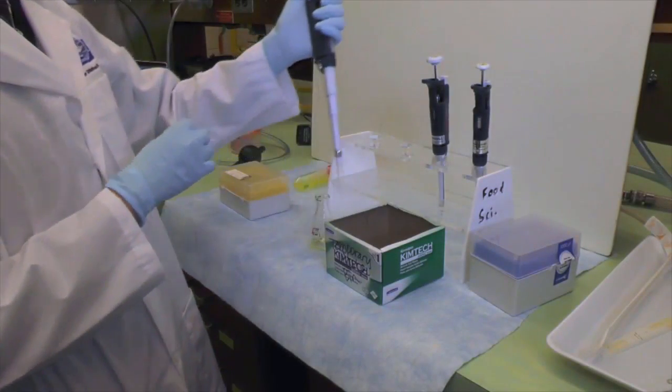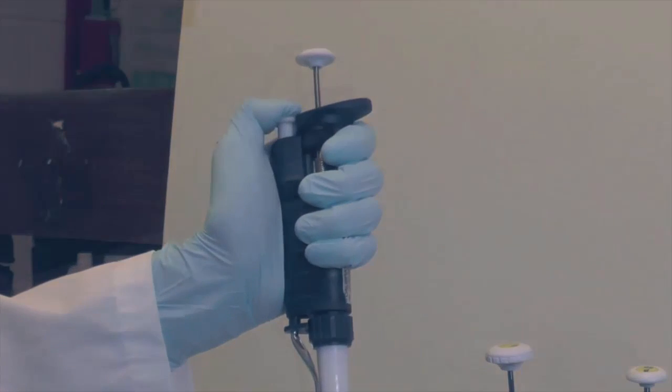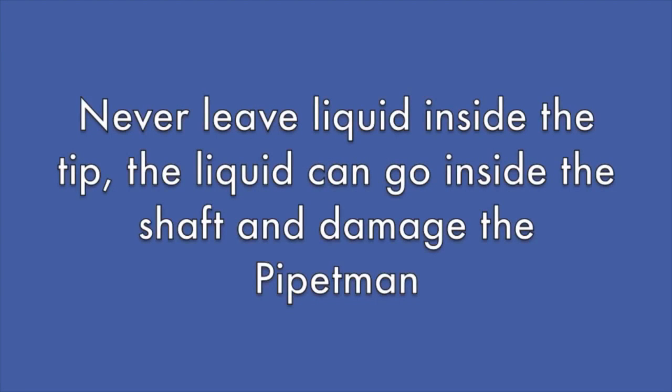If you need to change a pipet tip, you can eject the tip by pressing the tip ejector button. You should never leave a pipetment with liquid in the tip on the bench. The liquid will be released into the shaft and affect the function of the pipetment. Always eject the pipet tip before putting it down.